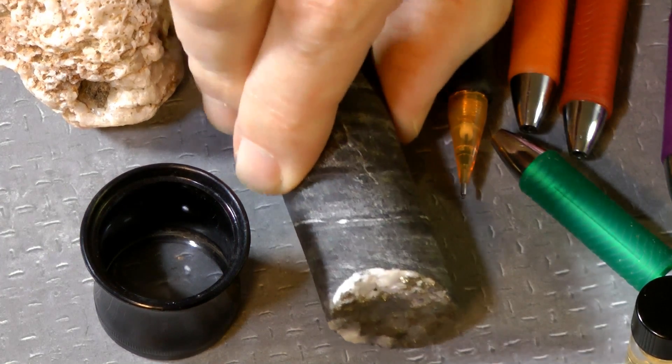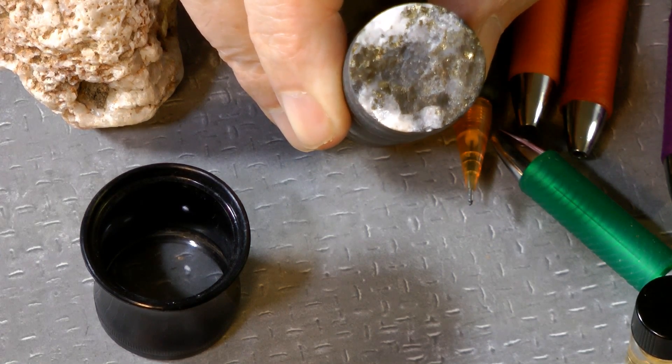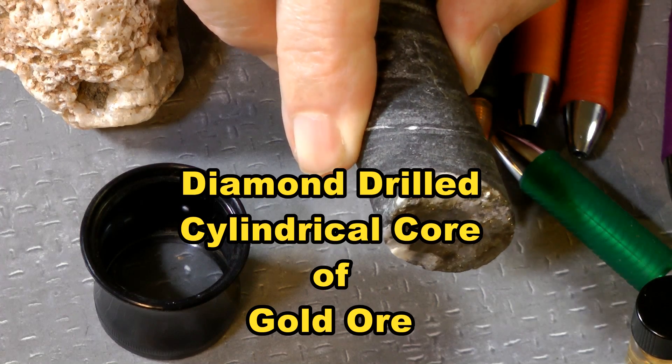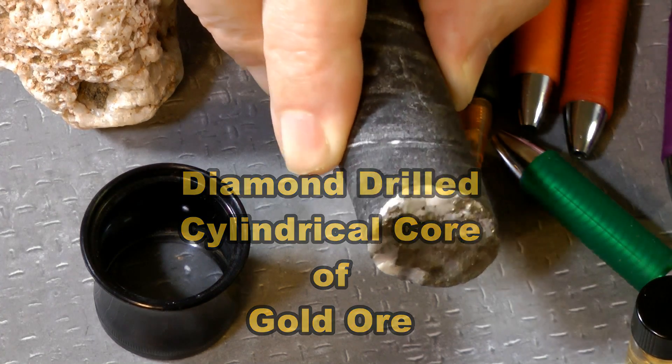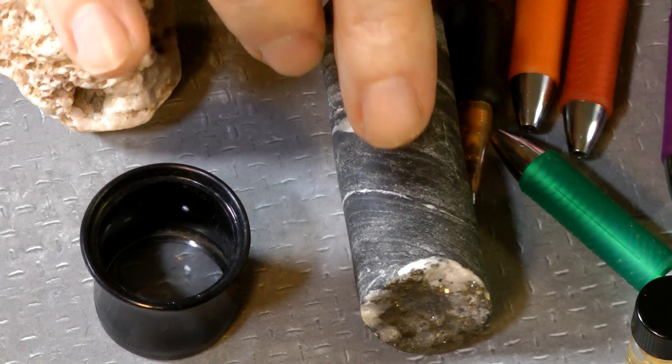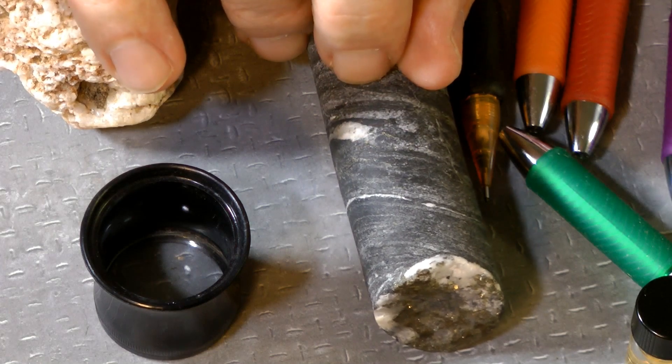But that's not the real story here. The story is the fact that they took these samples in a rather orderly fashion. These are diamond-drilled cylinders of gold, little pillars, each one of which tells the story vertically down through the gold mine, telling them exactly what's down below and how much gold there is.